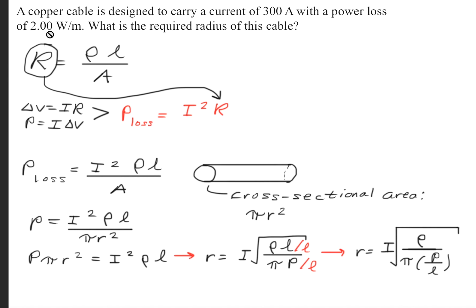The reason we're doing this is in the question we were told that there's a power loss of 2 watts per meter. By dividing by L, we get power, which is the watt, divided by L, which is the meter, so we get watt per meter. Now we can go ahead and plug in the given information here.